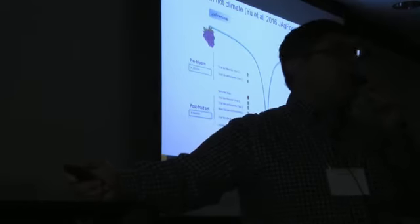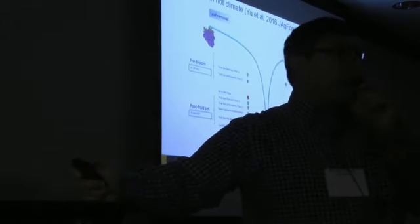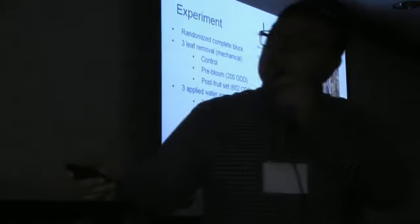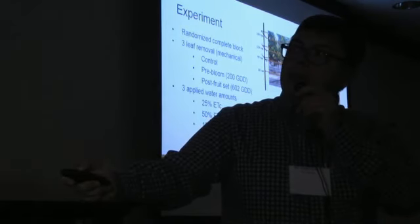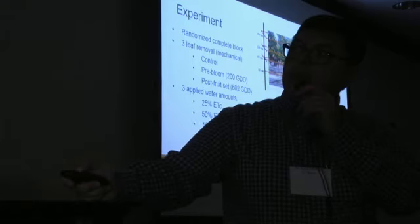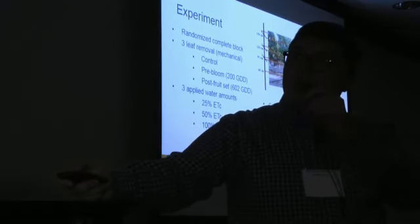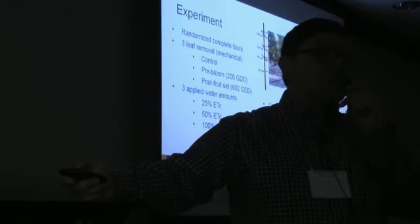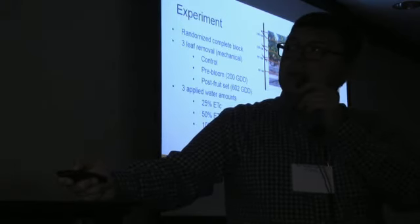When we turned to Cabernet, which we thought would be more interesting in the new trellises, we looked at three leaf removal treatments: control, pre-bloom, and post-fruit set. This work was done at the Oakville Station. Pre-bloom was applied mechanically at 200 growing degree days; post-fruit set at 600 growing degree days. On these vines we applied 25%, 50%, and 100% of ET crop—meaning 100%, 50%, or 25% of plant demand. Soils are fairly uniform; this was a drip-irrigated system applying about one gallon per hour, with 6 by 8 foot spacing.